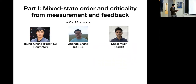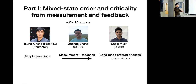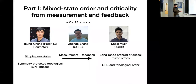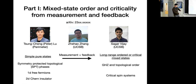This will be one of the motivations for the first part of this talk. This is work in progress with a postdoc at Perimeter, Peter, Sagar Vijay, who's a faculty member at Santa Barbara, and his student Ziha Zeng. In this first part of the talk, we will use precisely this type of operation — measurements followed by feedback — to efficiently convert simple pure states into non-trivial long-range ordered or even critical mixed states. One example is protocols for converting symmetry-protected topological states into GHZ or topological order via measurement and feedback.